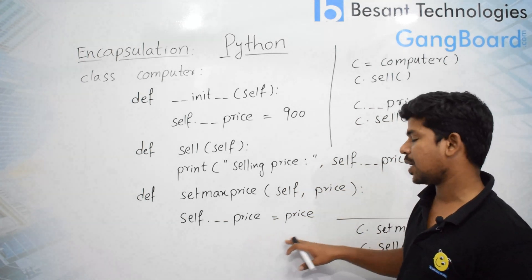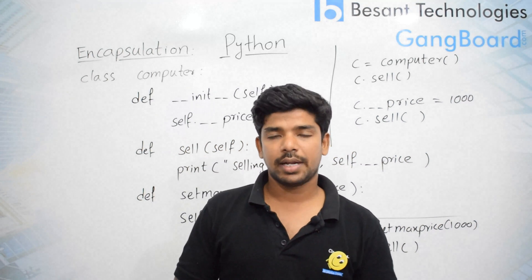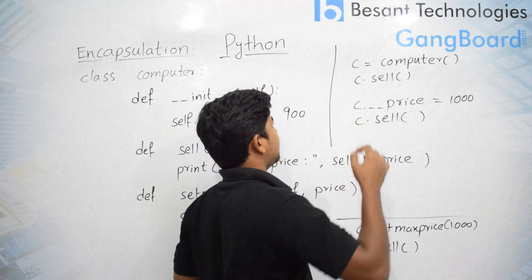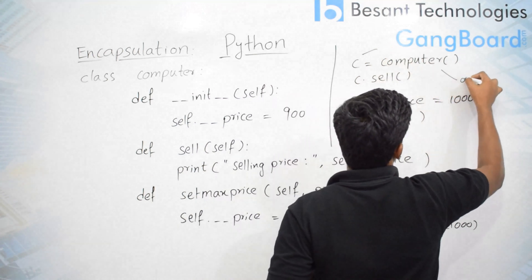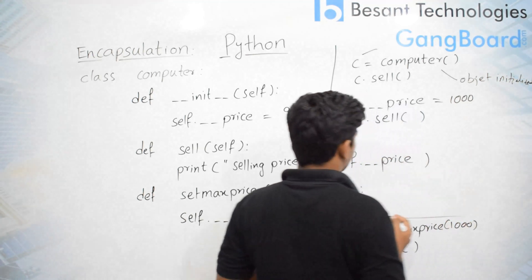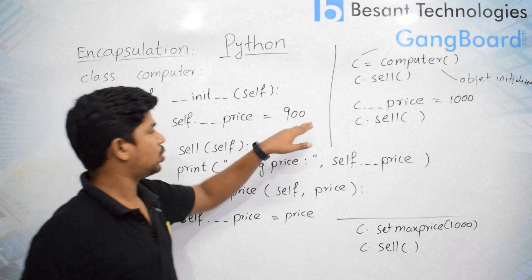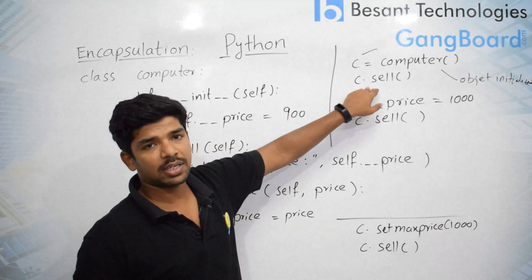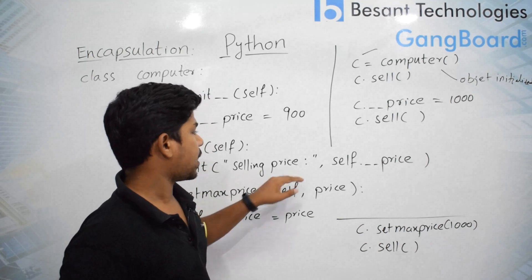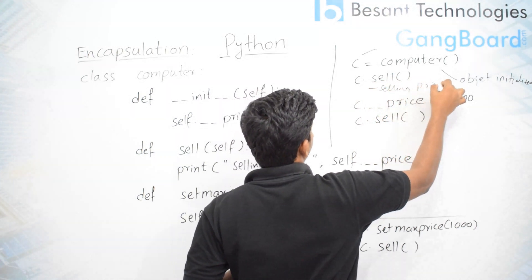When the user provides a value, it will be set to self dot max price and that price will be displayed. If there is an update, only the owner can edit it — no other can edit it. So I define C equals computer, that means the object is initialized. In the init I have specified the price as 900. So when I call C dot sell, this sell function will be called and it will print the selling price.